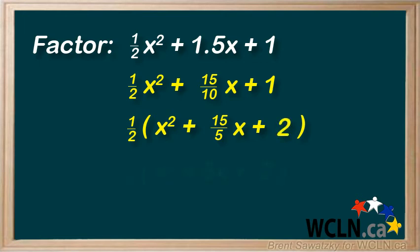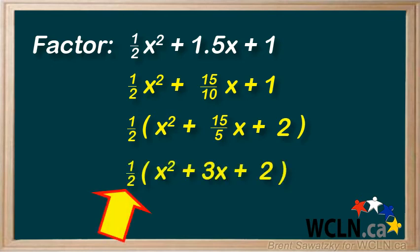And the result is no more fractions or decimals other than this one out the front. And we leave the one half out in the front. We don't want it to be part of the factoring, but we don't want to forget about it either. So, let's just keep it out there as we go through the steps.